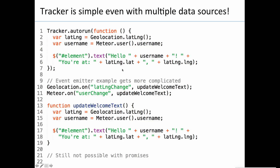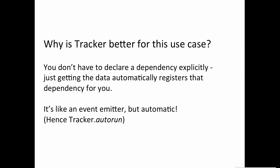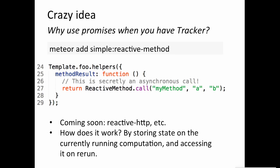Basically, I think Tracker ends up being a pretty good replacement for event emitters, if all you want to do is synchronize some data into a DOM node. The next idea I had is: what if Tracker wasn't just a replacement for event emitters, but also a replacement for promises? So I went and built this kind of crazy, wacky package called reactive-method.